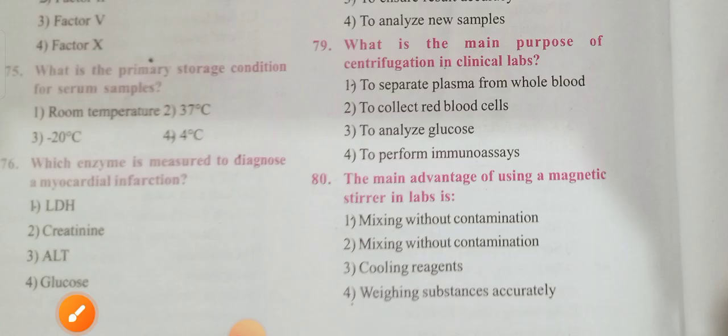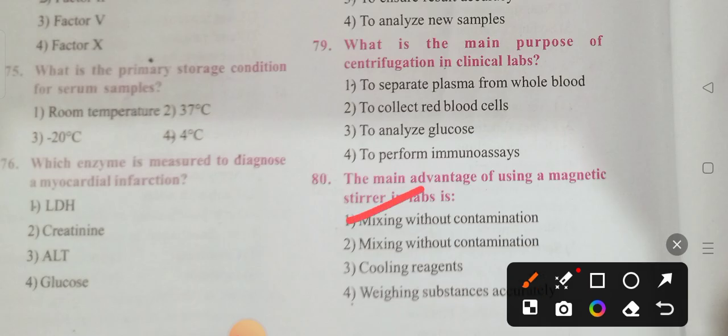Question 80: What is the main advantage of using a magnetic stirrer in a lab? Options: mixing without contamination, cooling reagents, weighing substances accurately. Option 1 is the correct answer — mixing without contamination.